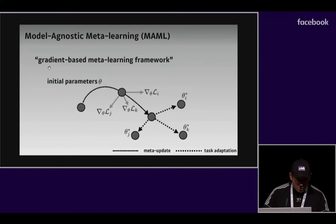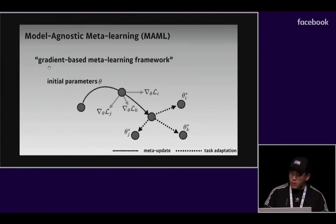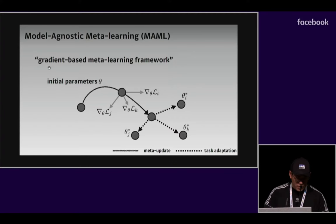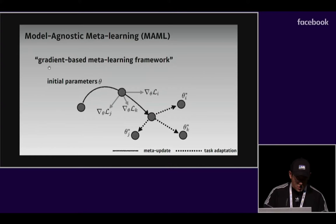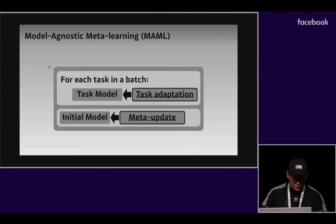Model Agnostic Metalearning is a powerful method for meta-learning. One nice property of MAML is that it requires only gradient-based updates to encode meta-knowledge into the initial parameters. This makes the method efficient and applicable to any model.